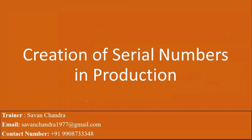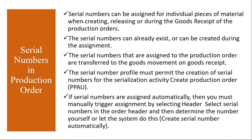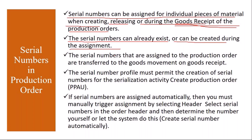From the PP perspective, we will discuss how to generate serial numbers automatically or manually and how they are handled. Serial numbers can be assigned for individual pieces of material when creating, releasing, or during goods receipt of the production order. There are two methods: first, you create the serial number and then assign it in the production order; or you can create serial numbers directly during production order creation or release.